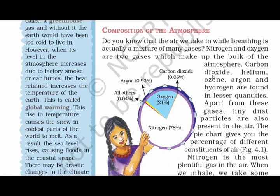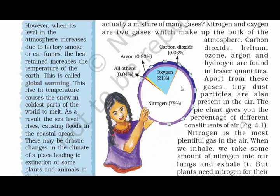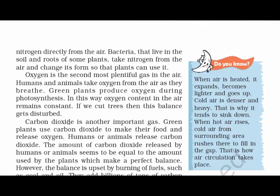Now let's read about the composition of the atmosphere. If you see this pie diagram, you can see nitrogen takes it over by 78% and oxygen takes it over by 21%. These two are the major gases which make up the bulk of the atmosphere. The other gases include carbon dioxide, helium, ozone, argon, and hydrogen, but they are found in lesser quantities.